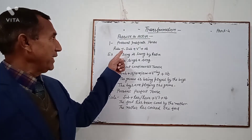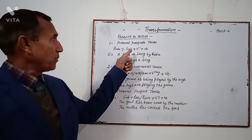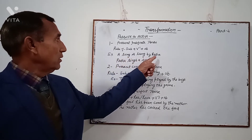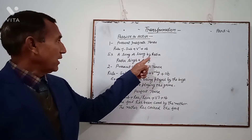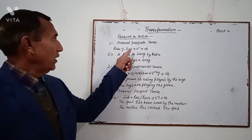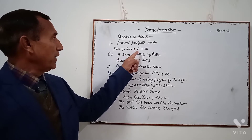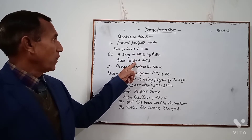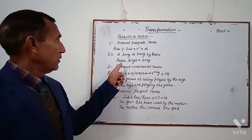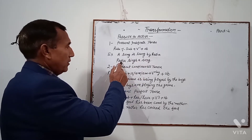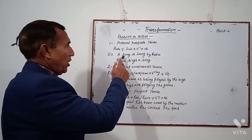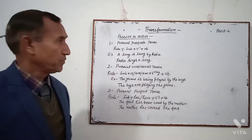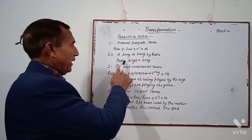Applying the rule of Present Indefinite tense — Subject + V1 + Object. Radha is the subject. According to the rule, V1 is 'sings'. A song is the object. So 'by Radha' is removed, Radha becomes subject, and the sentence becomes: 'Radha sings a song.'